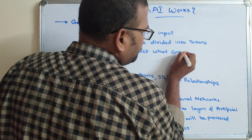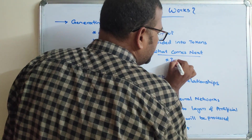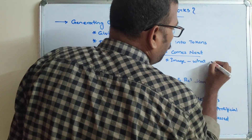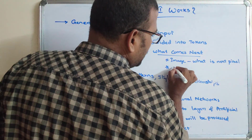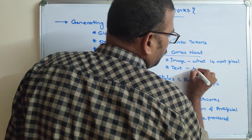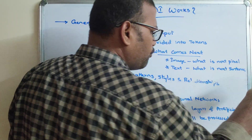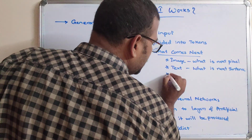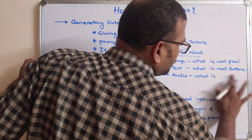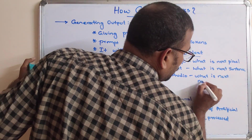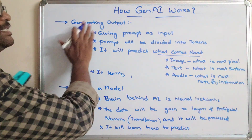What 'predicting what comes next' means depends on the content type: if it is an image, it predicts the next pixel, since an image consists of many pixels. If it is text, it predicts the next word or sentence that makes sense. If it is audio or code, it predicts the next note or instruction.